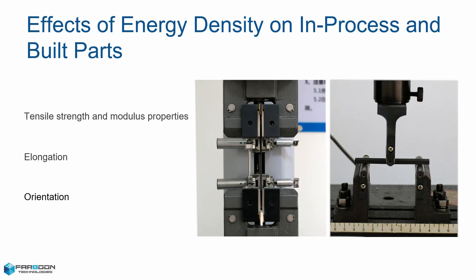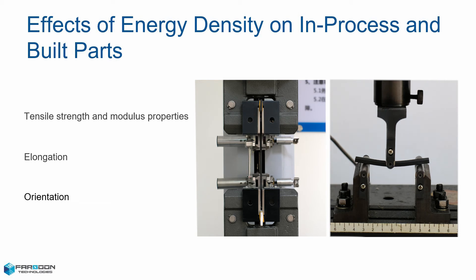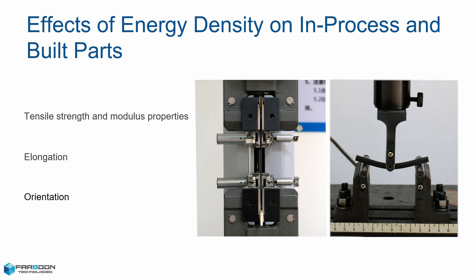Now we'll take a look at the effects of energy density on in-process and built parts. First, we have tensile strength and modulus properties. Generally speaking, the higher the ED, the denser the part and the higher the tensile properties. However, there is an upper limit, and excessive energy will cause a decrease in tensile properties. Next, we have elongation. As with tensile strength, elongation improves with an increase in energy density. To help offset anisotropy, increasing the energy density of vertically oriented parts can increase tensile properties. Elongation is mainly driven by the scan spacing and scan speed parameters. Field materials will always have greater anisotropic properties.